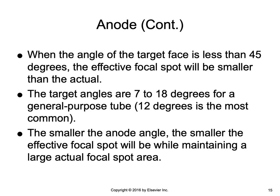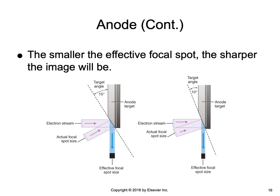When the angle of the target face is less than 45 degrees, the effective focal spot will be smaller than the actual focal spot. The target angles are 7 to 18 degrees for general purpose tubes, with 12 degrees being the most common. The smaller the anode angle, the smaller the effective focal spot while maintaining a large actual focal spot area — meaning a large actual focal spot for heat dissipation is maintained, but a small effective focal spot to improve image quality is created. The smaller the effective focal spot, the sharper the image. It should be noted that anode target angle is determined based on the intended use of the tube and is not something the radiographer selects at the operating console; for example, the angles are optimized for mammography units, angio units, general radiography units, and so on.